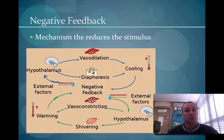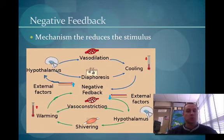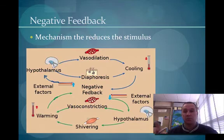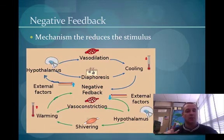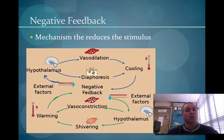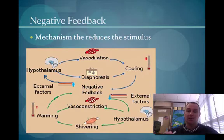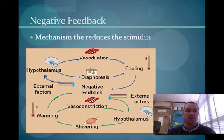A negative feedback loop is a mechanism that reduces the stimulus. For example, inside of you, if your temperature falls below the required body temperature of 98.6, your hypothalamus in your brain will tell your body to shiver. That shivering causes your body to warm up until it reaches the appropriate temperature, and that's called negative feedback because once it reaches that point, it stops.